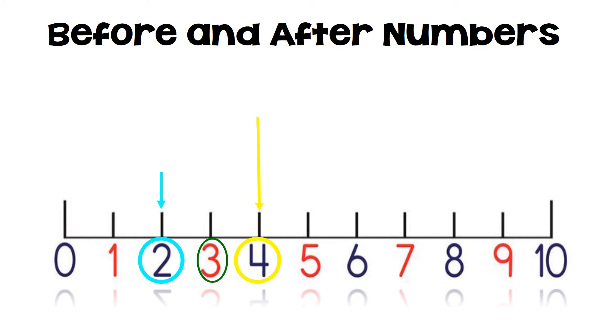Do you remember in our last lesson where we went over positional words? Great! We looked at objects that were in front of and objects that were behind. Using that same concept, we are going to be looking at numbers that are before and after. Numbers that are before are in front of another number. Numbers that are after are behind another number.